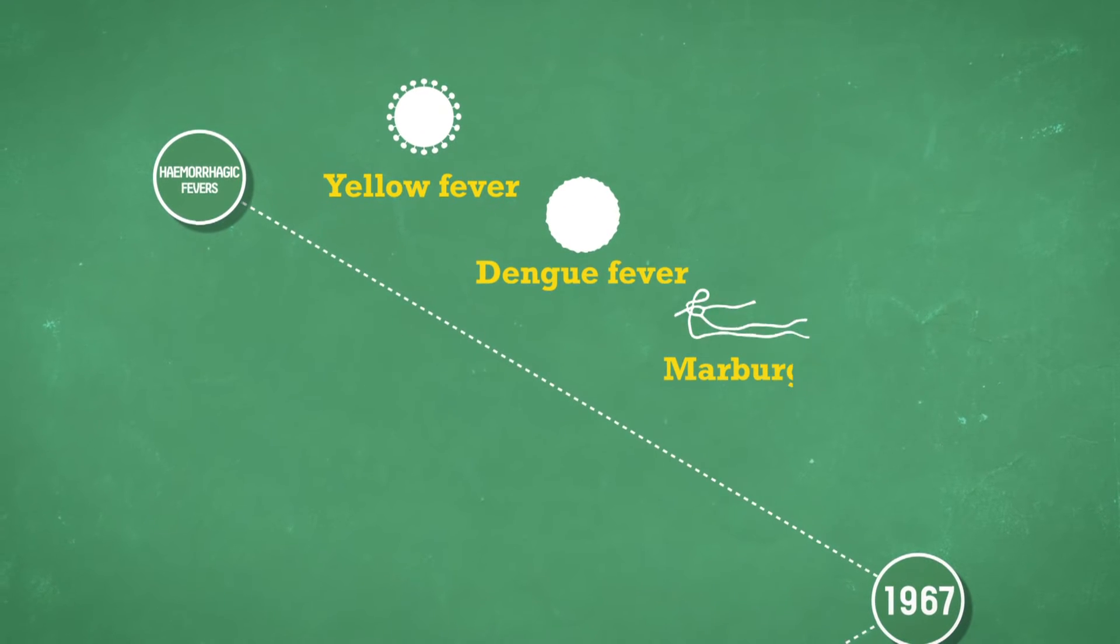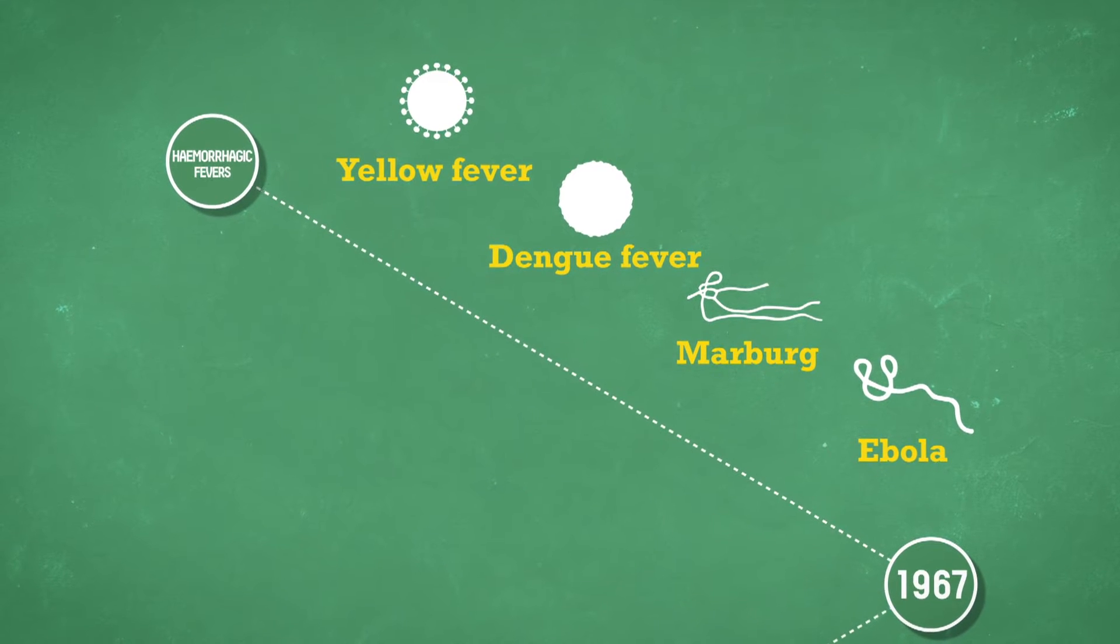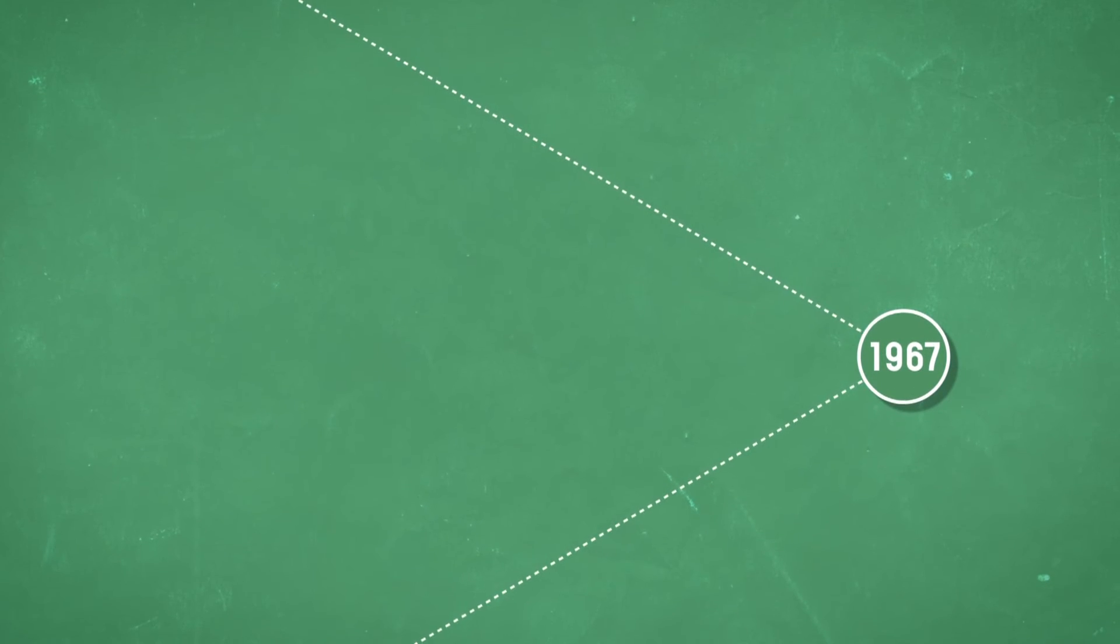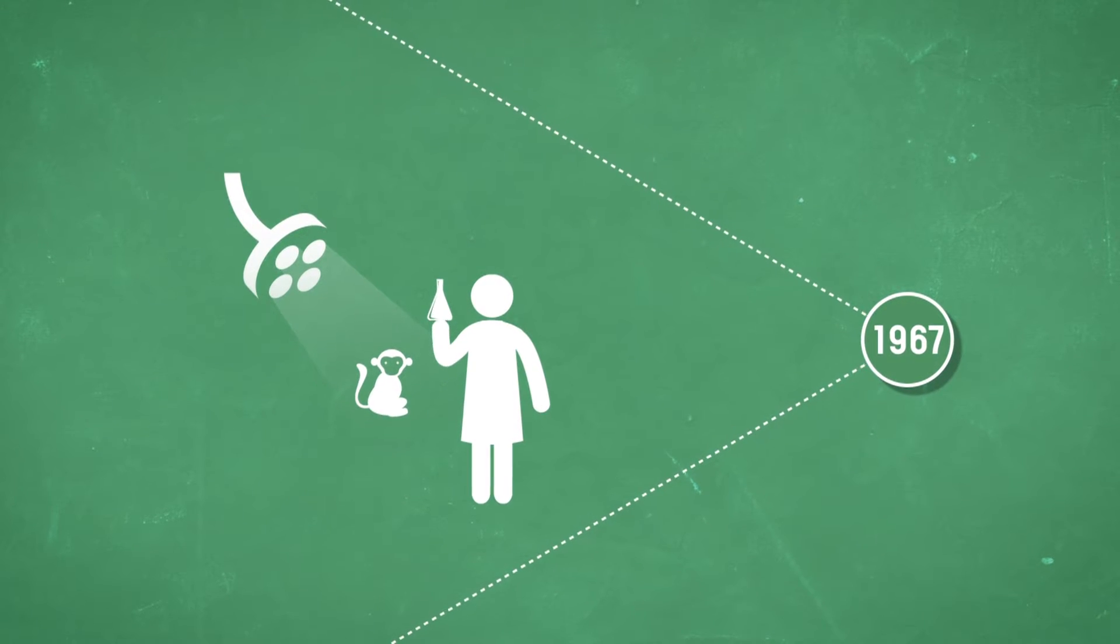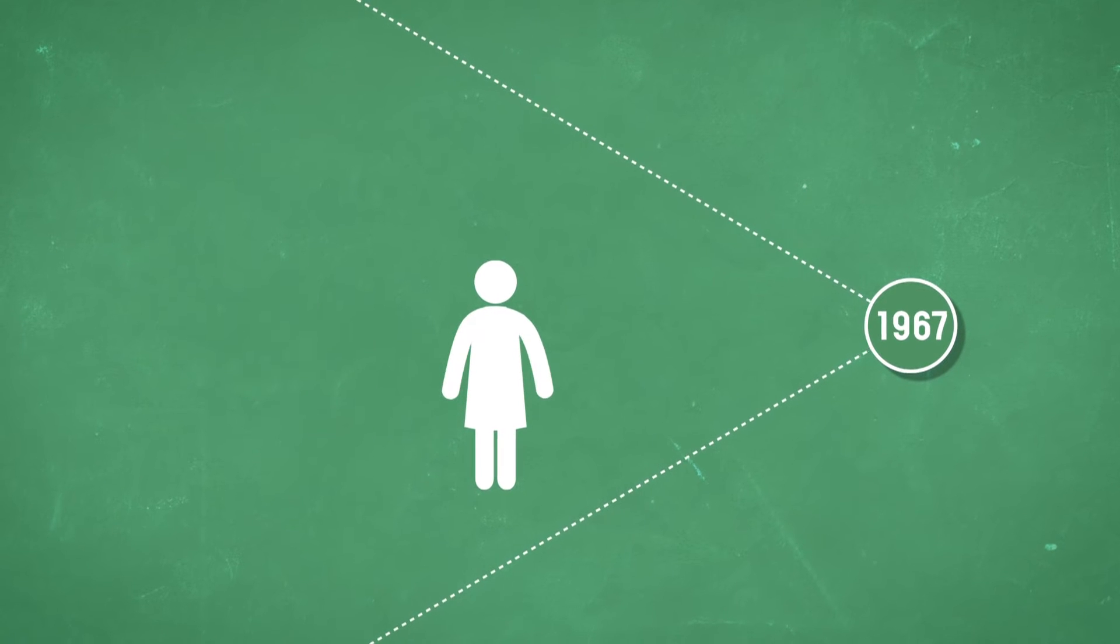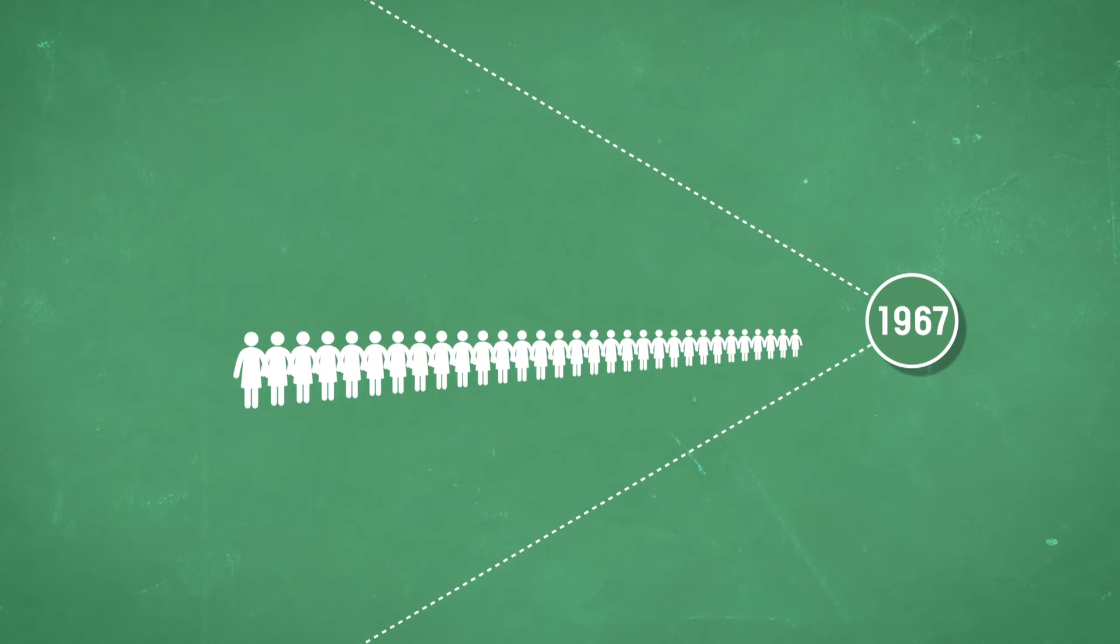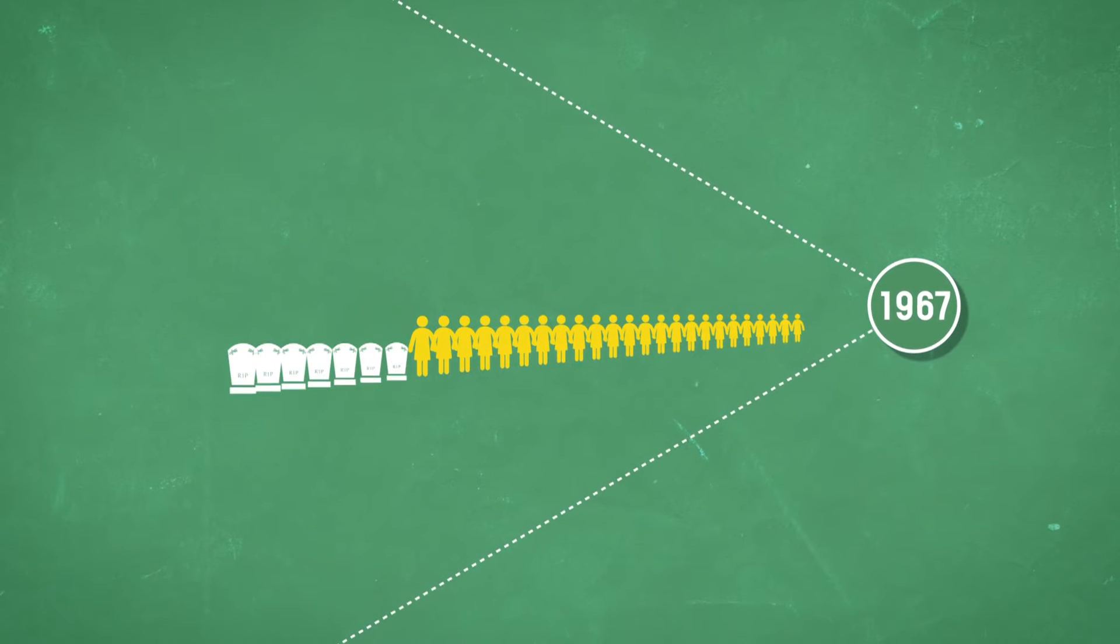Ebola, like yellow fever, dengue, and Marburg, is a hemorrhagic fever. In 1967 in Marburg, Germany, researchers were studying the kidney cells of monkeys from Uganda. Thirty-one laboratory technicians became infected with a mysterious virus, and seven of them died.